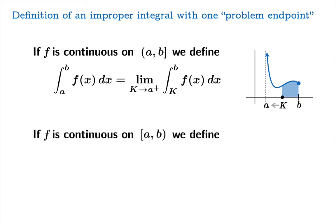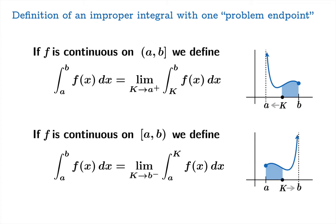Similarly suppose f is continuous on the interval from a to b this time we'll exclude b which allows for example for a vertical asymptote to occur at b. We will define the integral from a to b to be equal to the integral from a to k and then we'll look at the limit of that as k approaches b from the left.